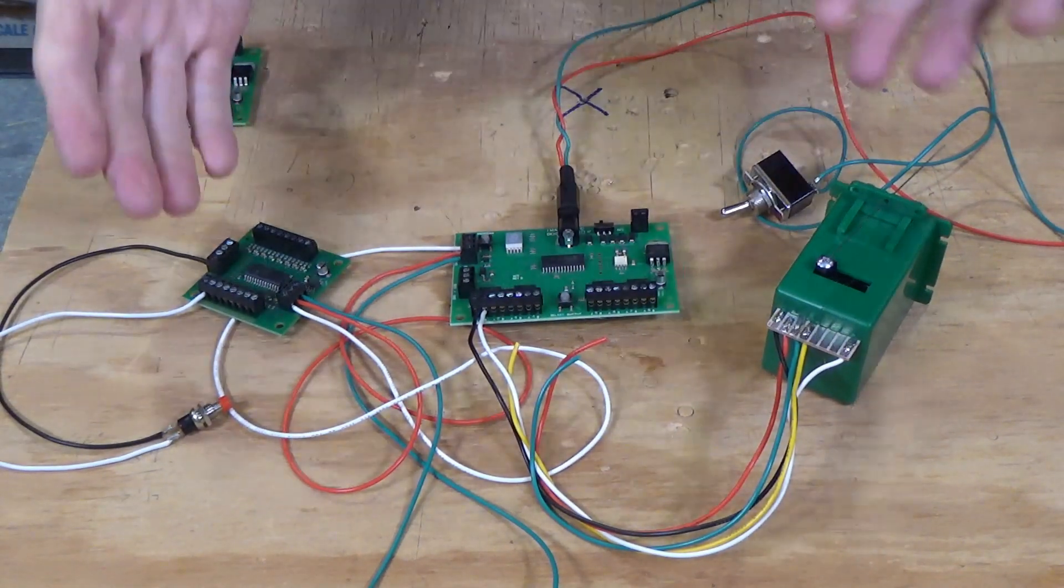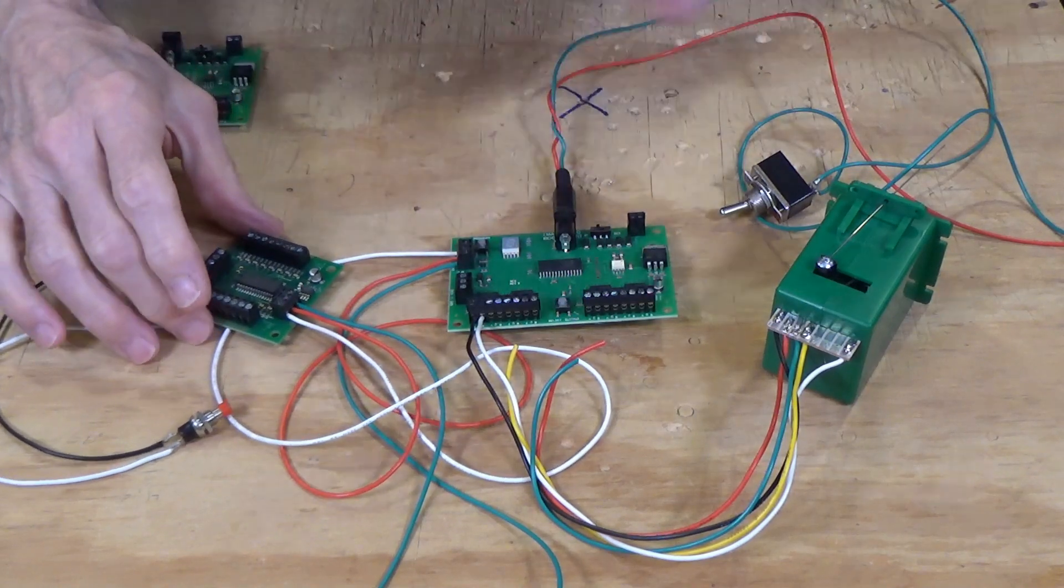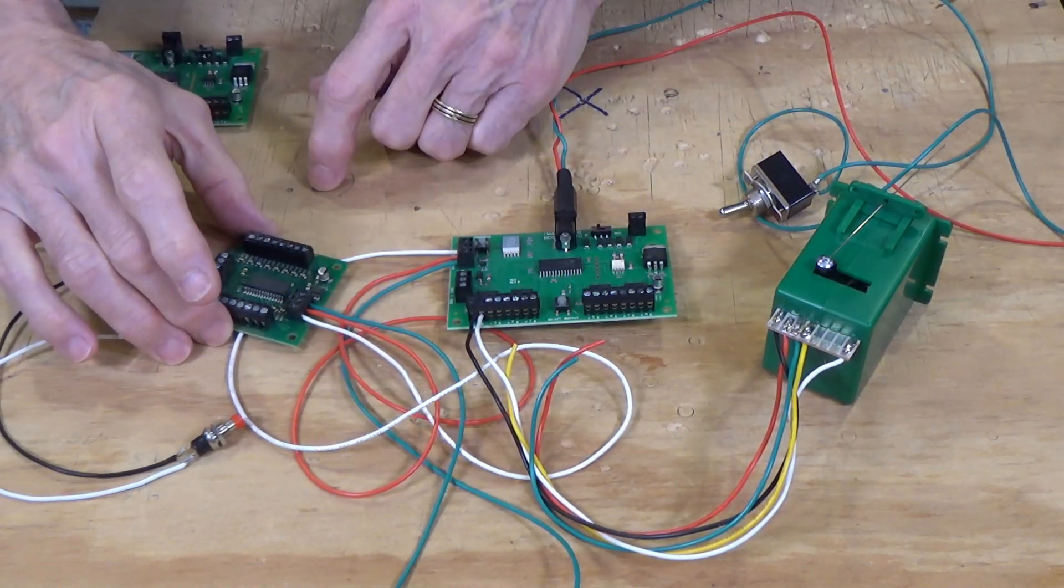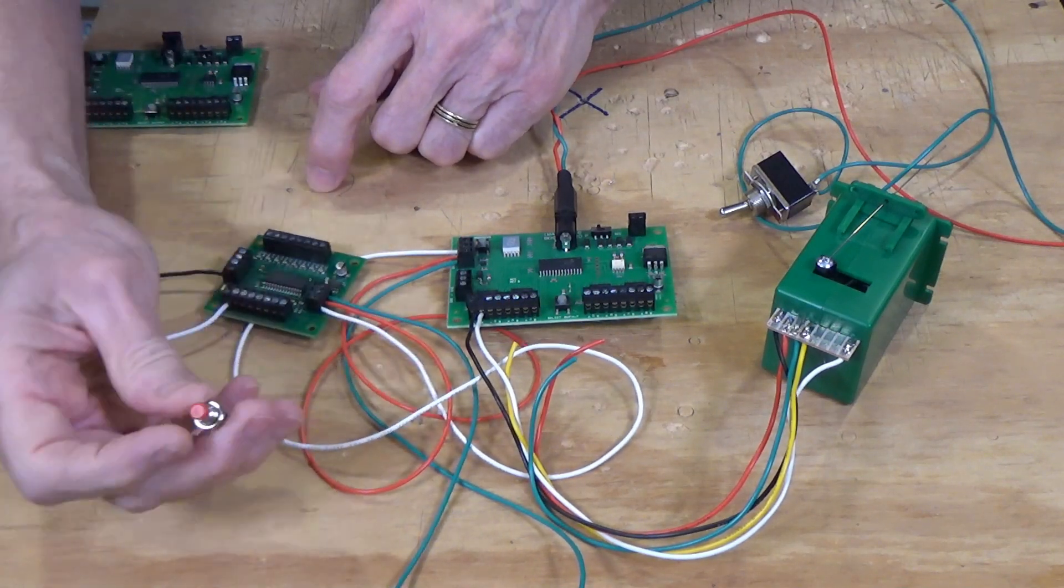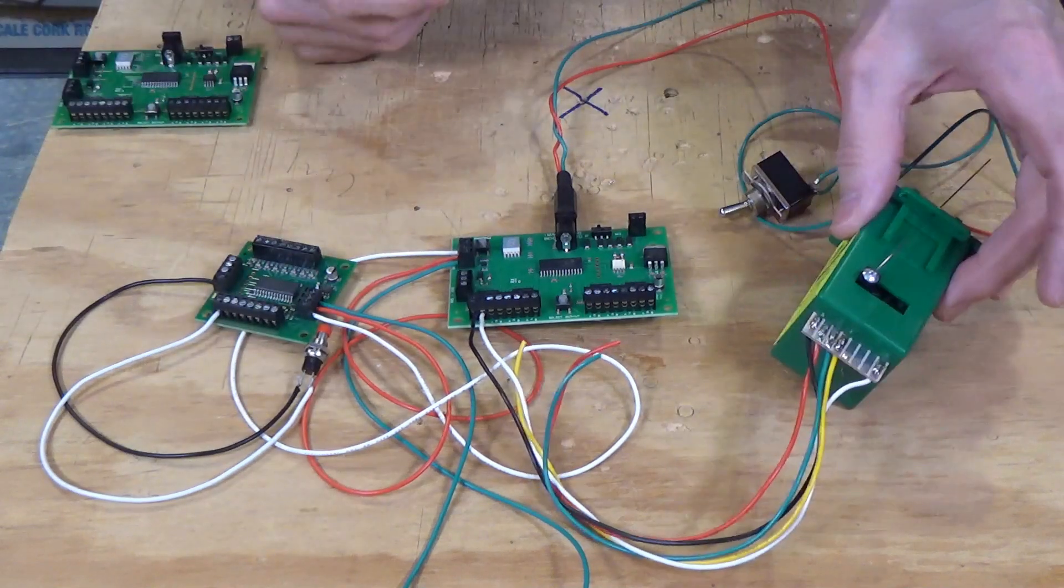Okay, I've got the Switch 8 accessory decoder set up just like I did back in September of 2019 with the button board here with a simple momentary contact push button switch and the tortoise attached.